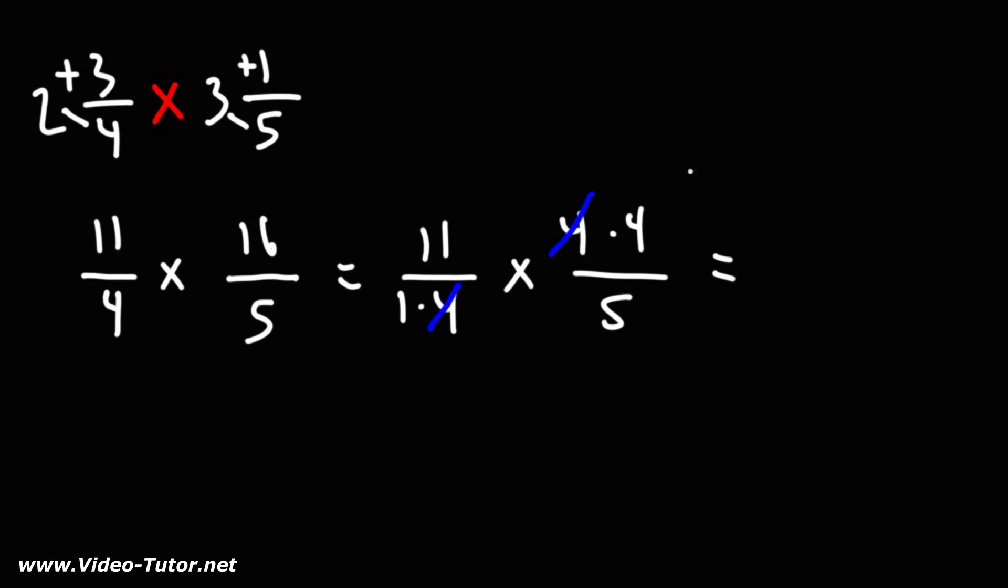So now let's multiply across. 11 times 4 is 44, and 1 times 5 is 5. So we have 44 over 5.